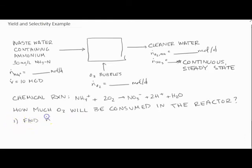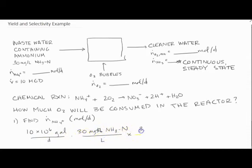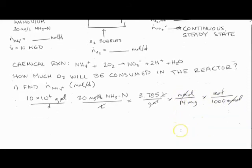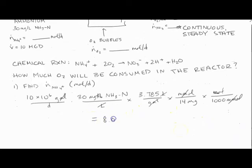In order to do that, the first thing that I need to do is find the molar flow rate of ammonium coming into the reactor. I'm going to use the volumetric flow rate, 10 million gallons per day, and I'm going to multiply that by the concentration of ammonium. Remember, because we have this NH3N, what we're going to have to do is use the molecular weight of nitrogen, not NH3 or NH4 plus, in order to solve this. What I end up getting is 8 times 10 to the 4 moles per day of ammonium needing to be treated.